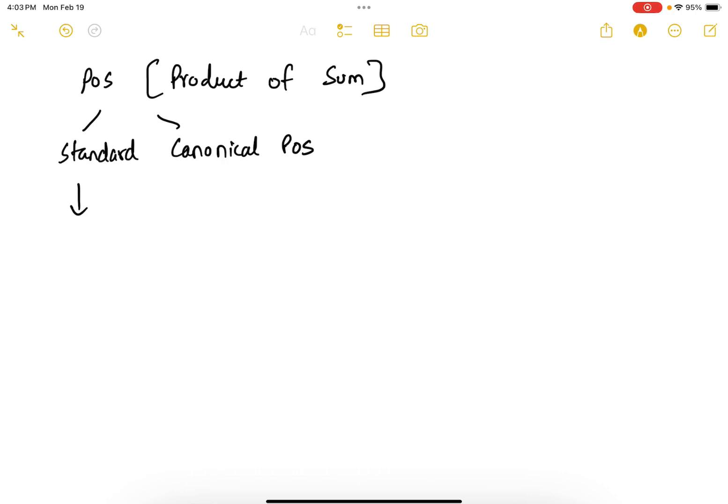So a standard POS can look something like this. We have a function f of a, b, c, which is a or b prime and a or c. This is in the standard POS form.